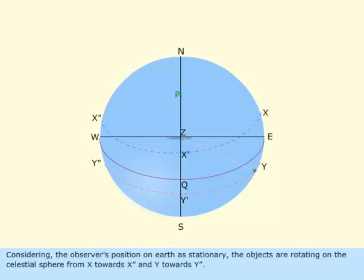Considering the observer's position on the Earth as stationary, the objects are rotating on the celestial sphere from X towards X' and Y towards Y'.